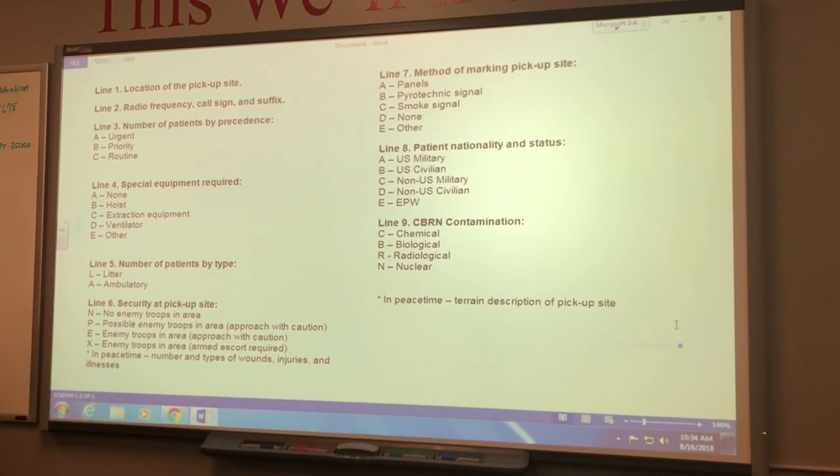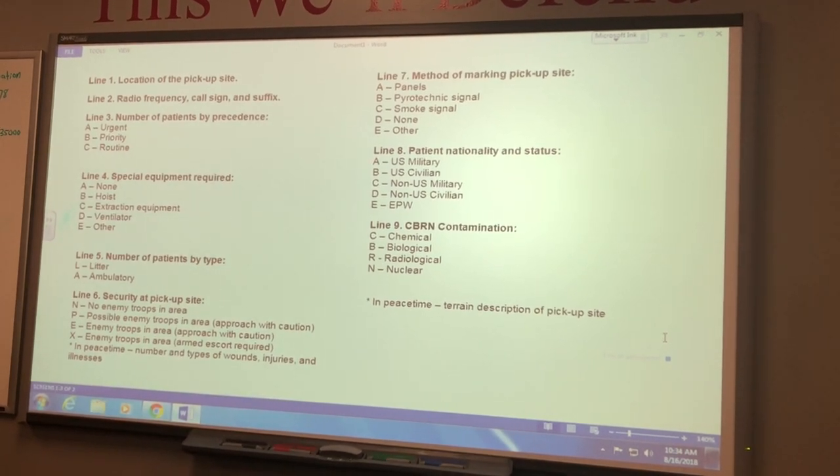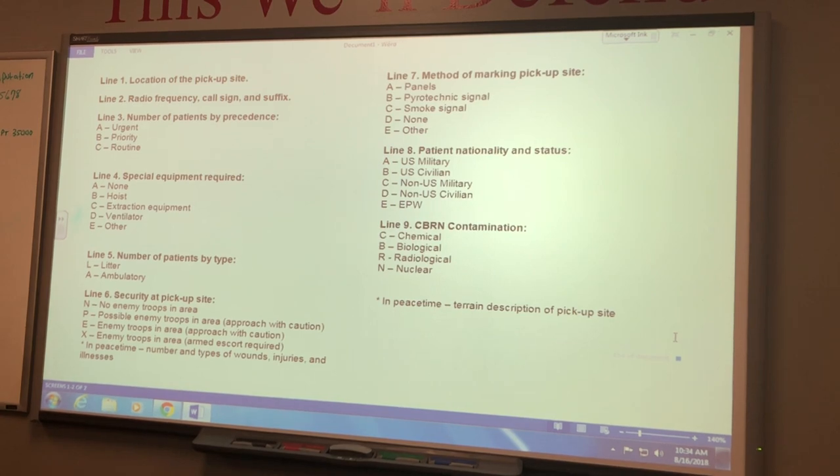Line seven is your method of marking pickup site. Alpha is panels, Bravo is pyrotechnic signal, Charlie is smoke signal, Delta is none, and Echo is other.